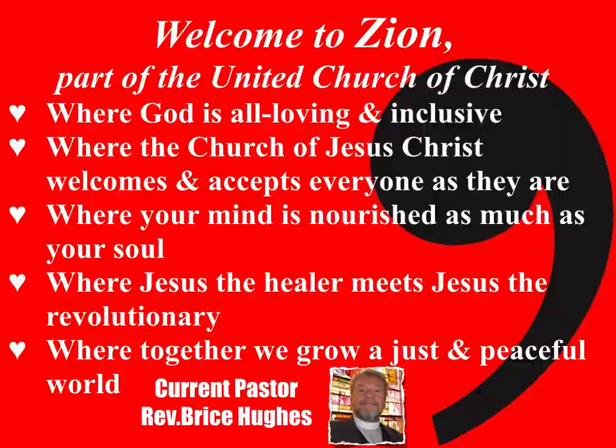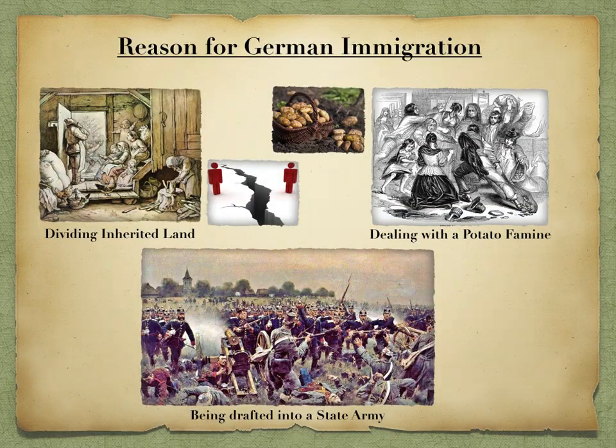Let's begin with a history. Why did the Germans immigrate to Burlington, Iowa? In 1830, 40,000 people left Germany because of some of these reasons. After the Napoleonic Wars ended in 1815, the German economy was suffering.